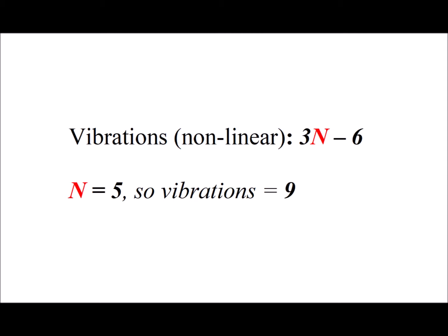To find the number of vibrations in a nonlinear molecule, that is equal to 3N minus 6, where N is the number of atoms in the molecule or ion. Here, the number of atoms is 5, N equals 5, so we have a total of 9 vibrations.